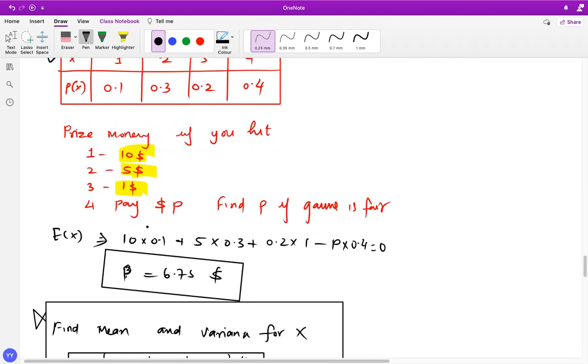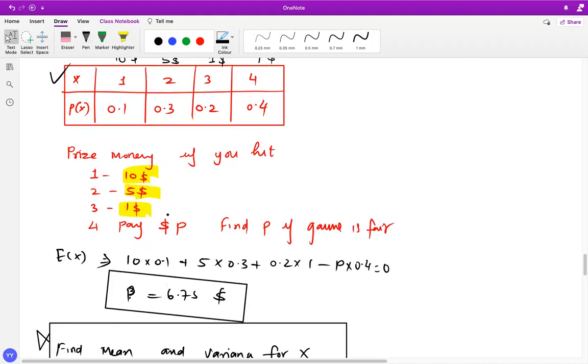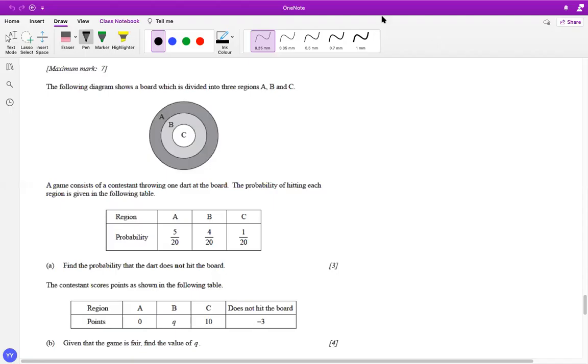So this is what is the concept of fair games. So expected earning is zero for the particular event. There are some more examples that we can take for fair game.